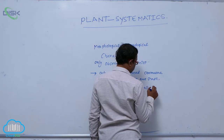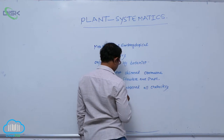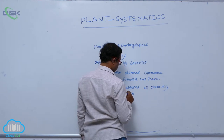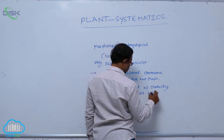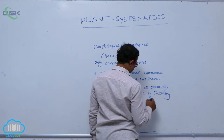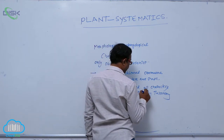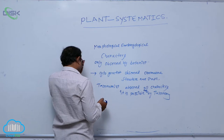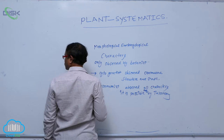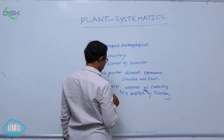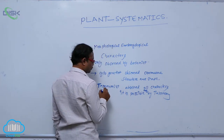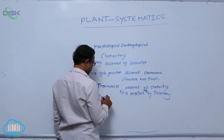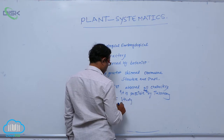All characters can be observed; it is possible by taxonomy. In this process, the taxonomist observes all characters. It is possible only through the taxonomy process.